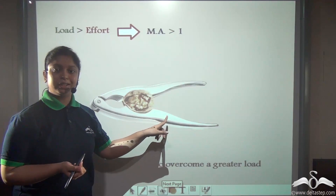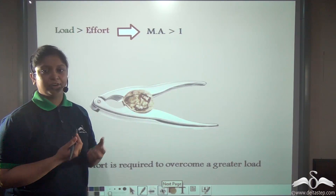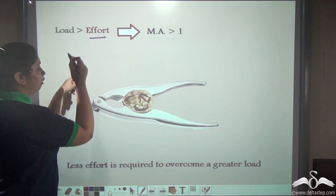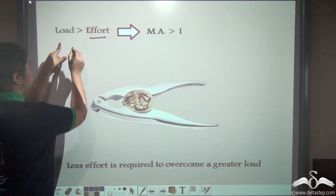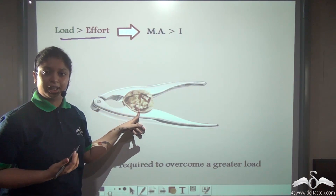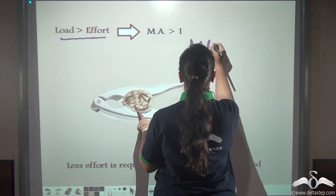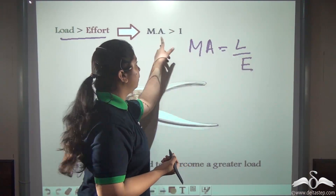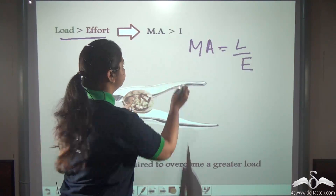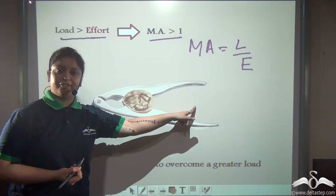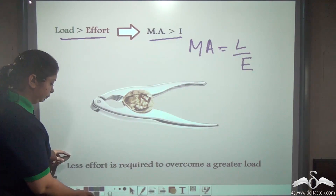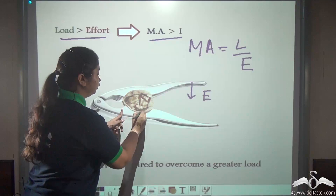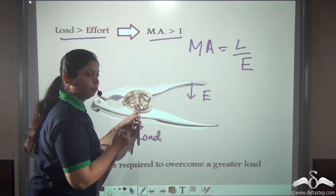Let us see some examples which define these three conditions. We use a nutcracker to break open a nut, which is very difficult to do by hand. By using a nutcracker, we are using a smaller effort to overcome a very large load. In this case the load is greater than the effort, so the mechanical advantage is greater than one. The effort is applied on the handle of the nutcracker, and the load is the nut we are trying to break open.